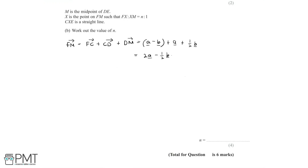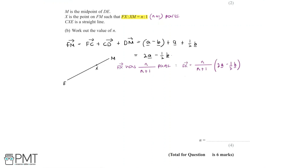Now let's consider what the ratio means. X lies on FM such that FX to XM equals N to 1, giving N plus 1 total parts. FX has N of these parts and XM has 1. Since FM equals 2a minus half b, the vector FX equals N over (N plus 1) multiplied by (2a minus half b), and the vector XM equals 1 over (N plus 1) multiplied by (2a minus half b).